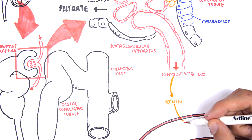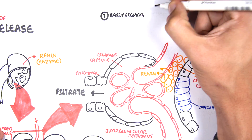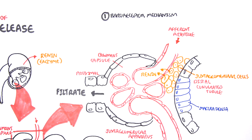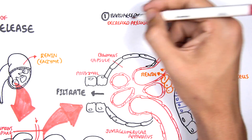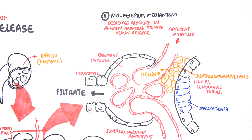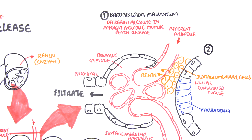There are three ways renin is released. The first way is through the baroreceptor mechanism. Baroreceptors are a group of receptors that detect changes in pressure. When there is decreased pressure in the afferent arteriole, this will promote renin release. The goal of renin is to increase blood pressure, so a decrease in pressure tells the juxtaglomerular cells to produce renin to increase blood pressure. That is the first mechanism of renin release.